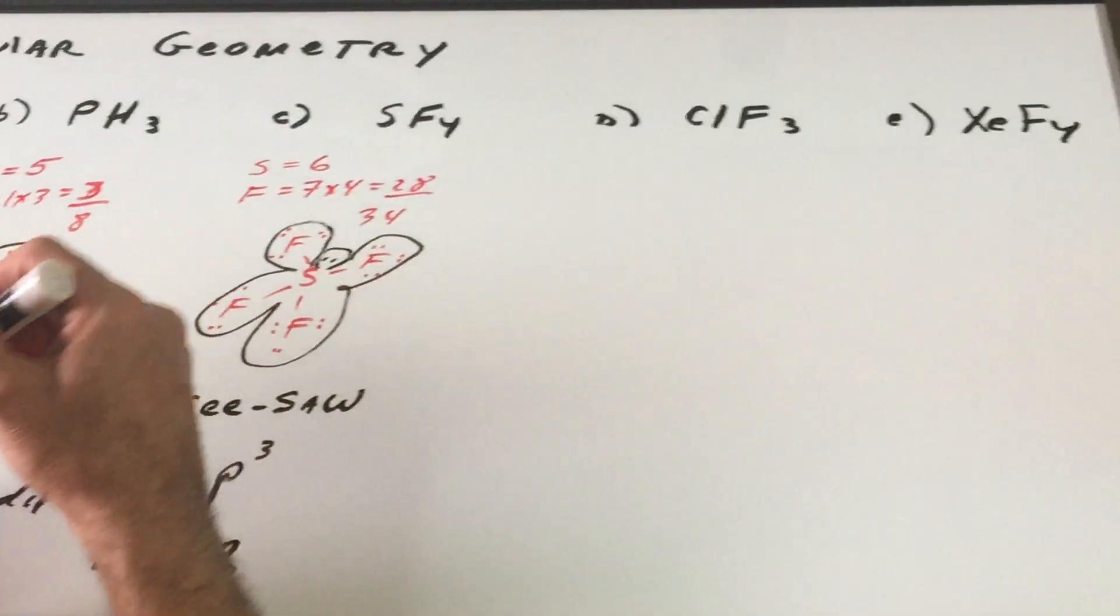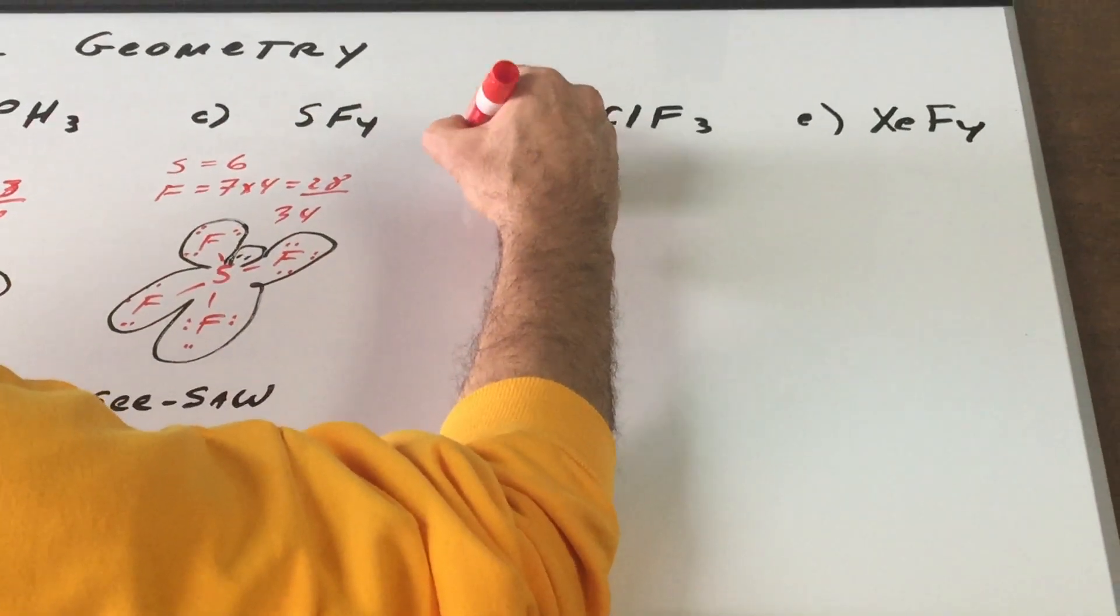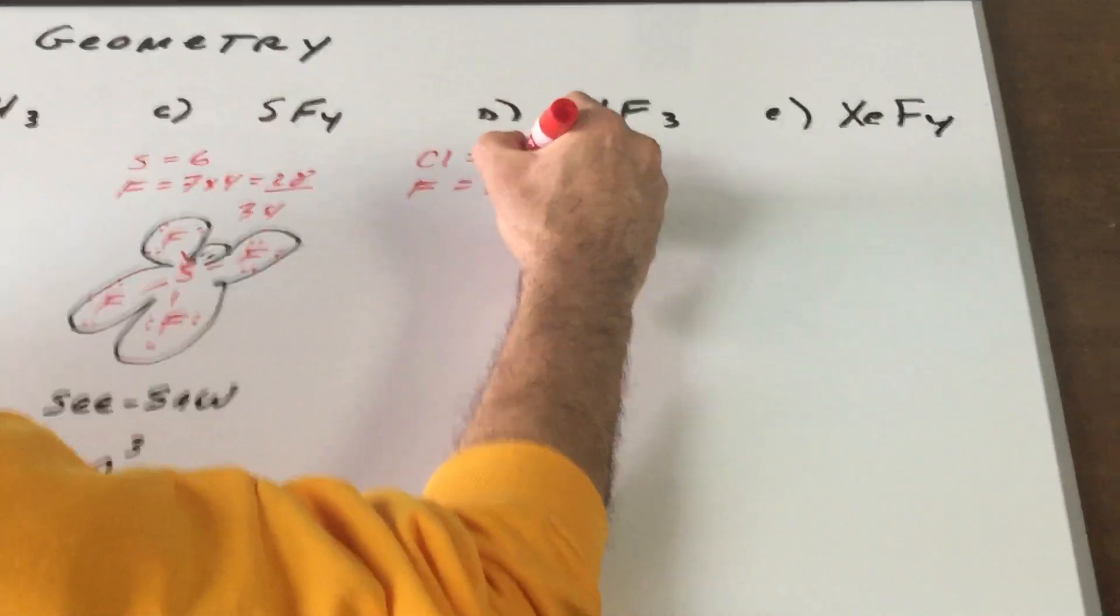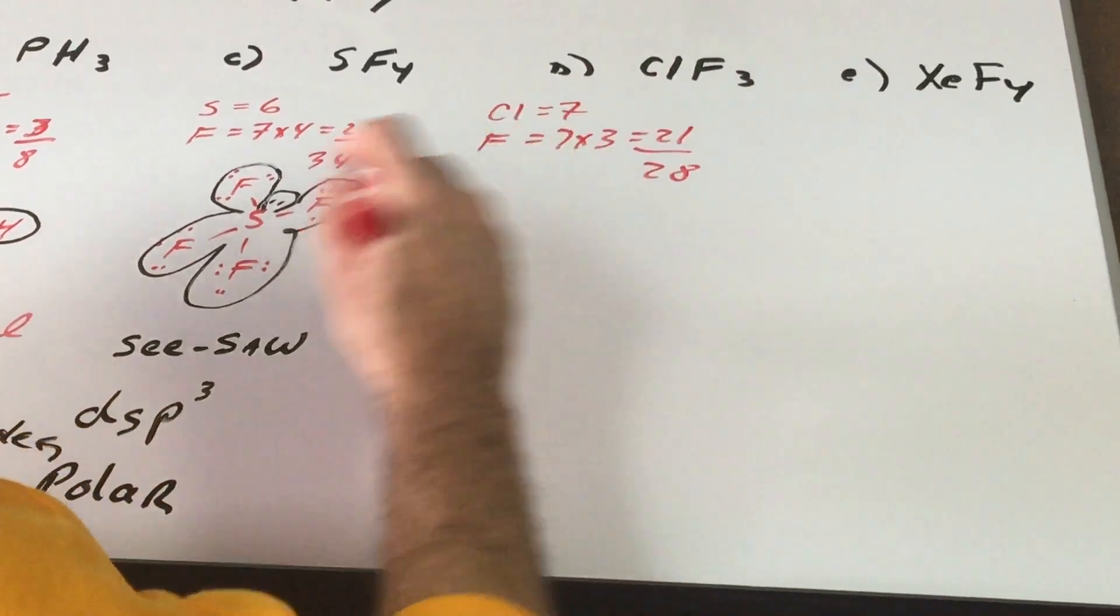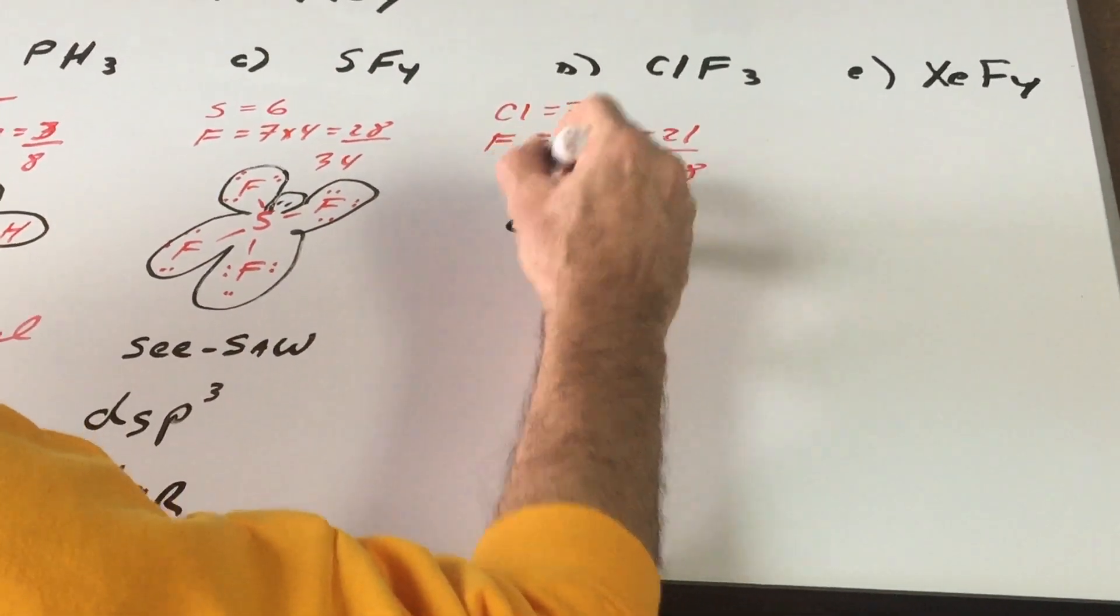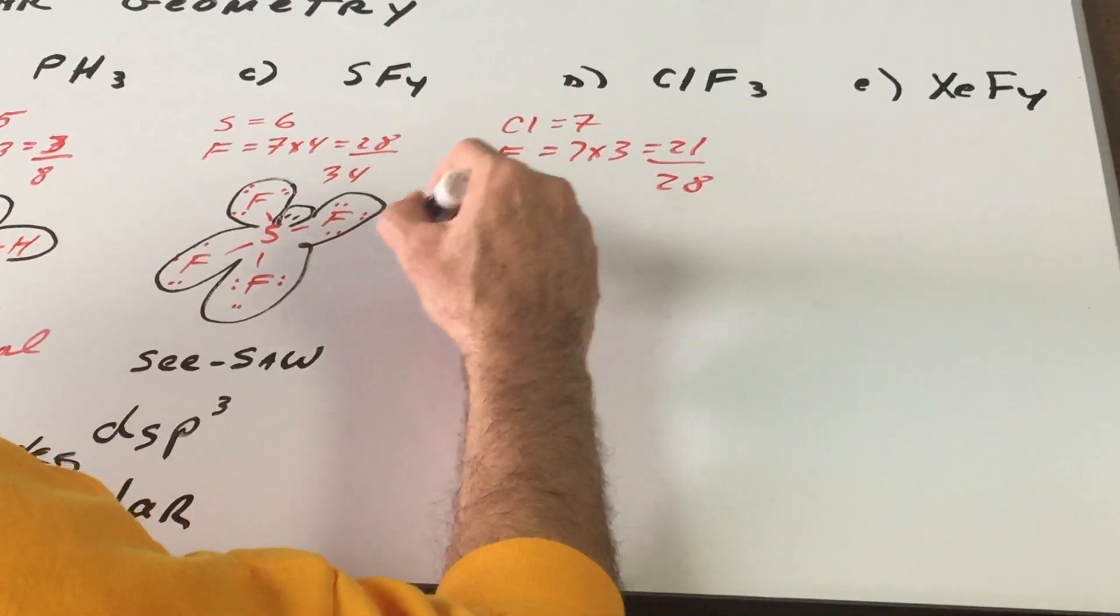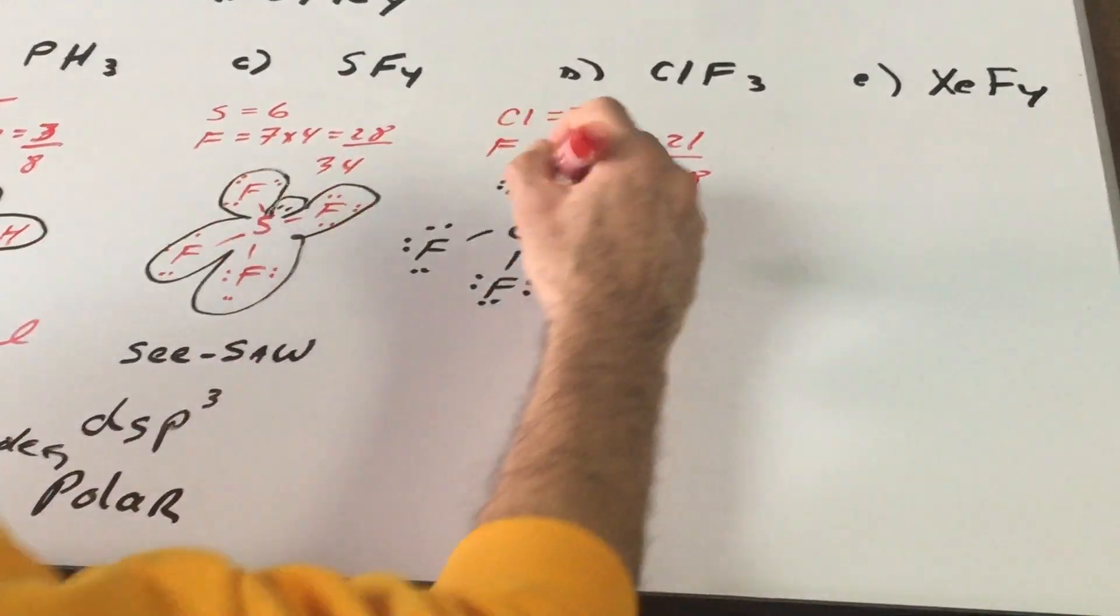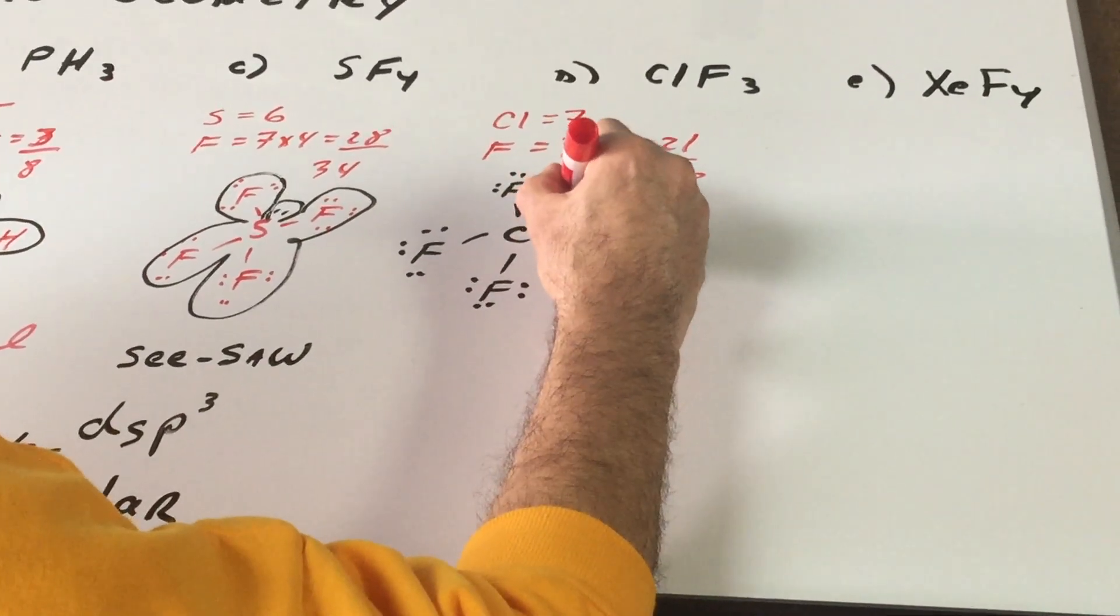We go for the next one. And I see that chlorine, we'll put this as a group seven. Fluorine, seven threes are 21. This gives me a total of 28. We put the chlorine here. And we got one, two, three. And that would give me eight, 16, 24. But now we need two more pairs. And we put them in like this.